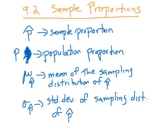This is a video for section 9.2, which is all about sample proportions. Remember, this is all about sampling distributions. It turns out that the problems in chapter 9 break down into two categories: either about proportions, which is what section 9.2 is about, or means, which is what section 9.3 is about.